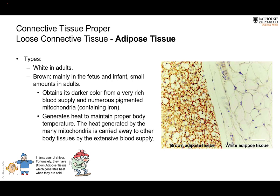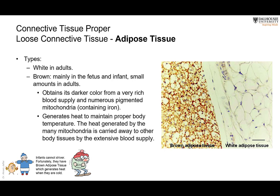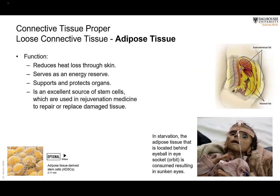Brown adipose tissue looks darker because it has many blood vessels, and the adipocytes contain pigmented mitochondria with iron. In newborns, this tissue is the source of heat to control body temperature. Adults shiver to produce heat through muscle contraction, but shivering is not available in newborns. Instead, the mitochondria — the furnaces of the cell — burn fuel, and abundant blood supply distributes the heat to control body temperature.